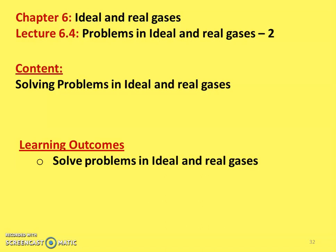This is part 2. In the previous lecture, we discussed the theory part of the ideal and real gases and solved problems. We solved problems in ideal and real gases to calculate the pressure using the ideal gas equation or the perfect gas equation and Van der Waals equation. The learning outcome: at the end of the lecture, the student will be able to solve problems in the ideal and real gases.